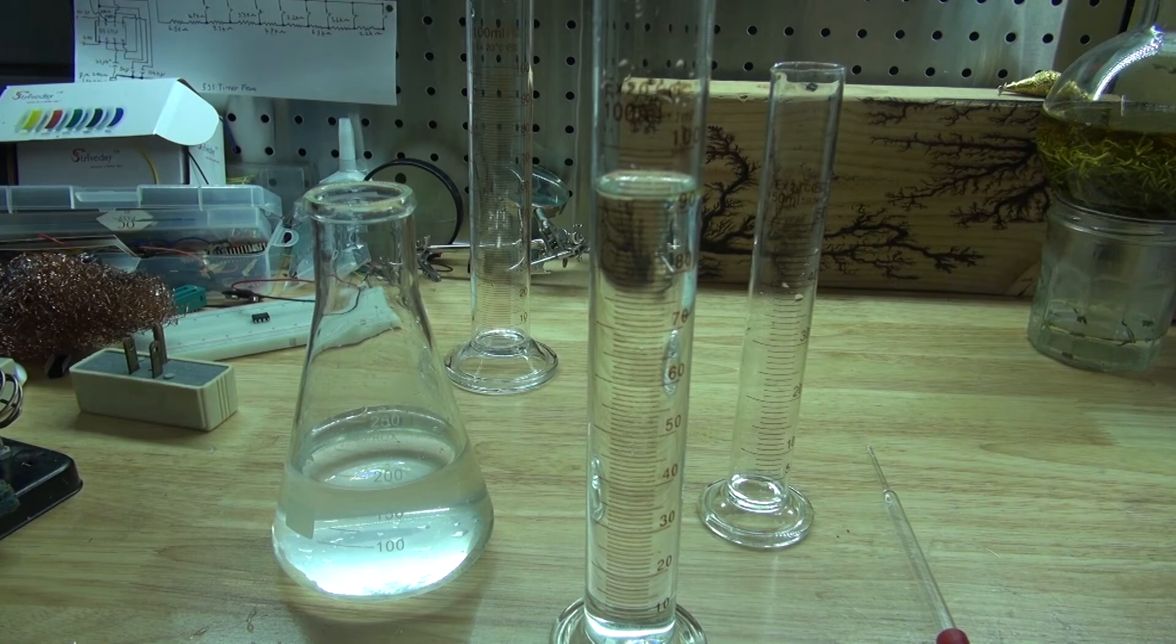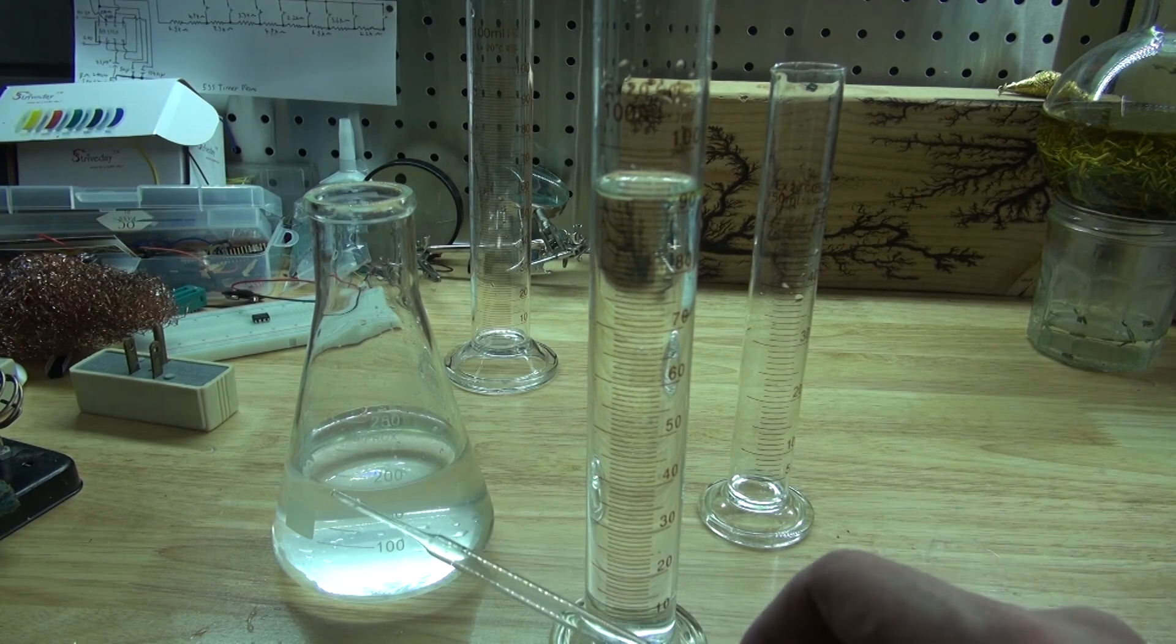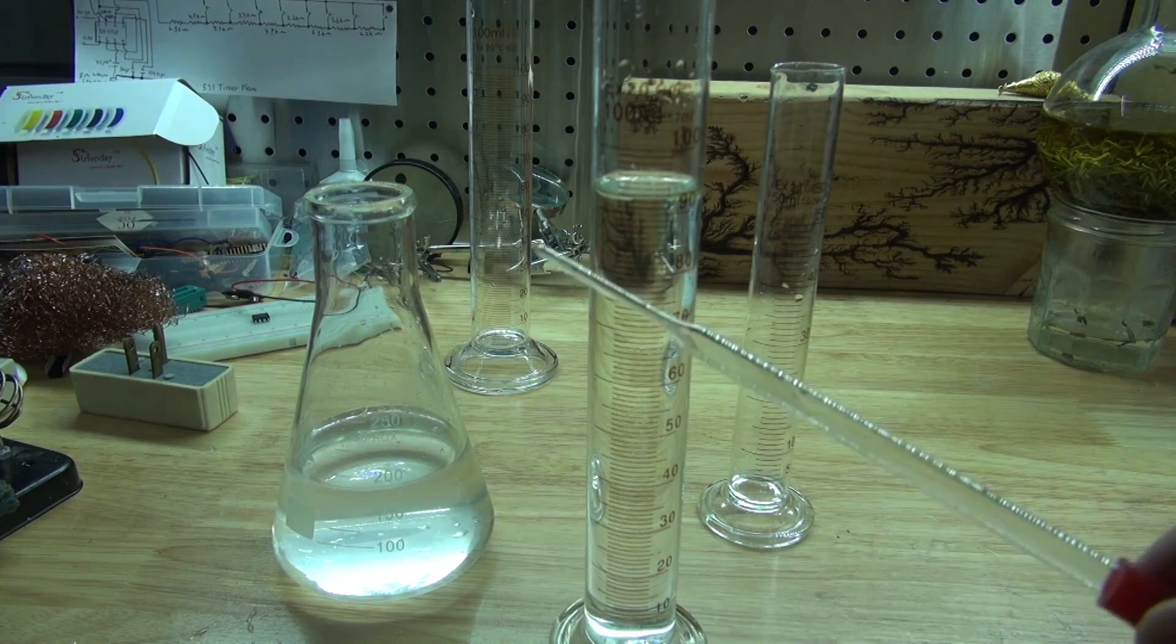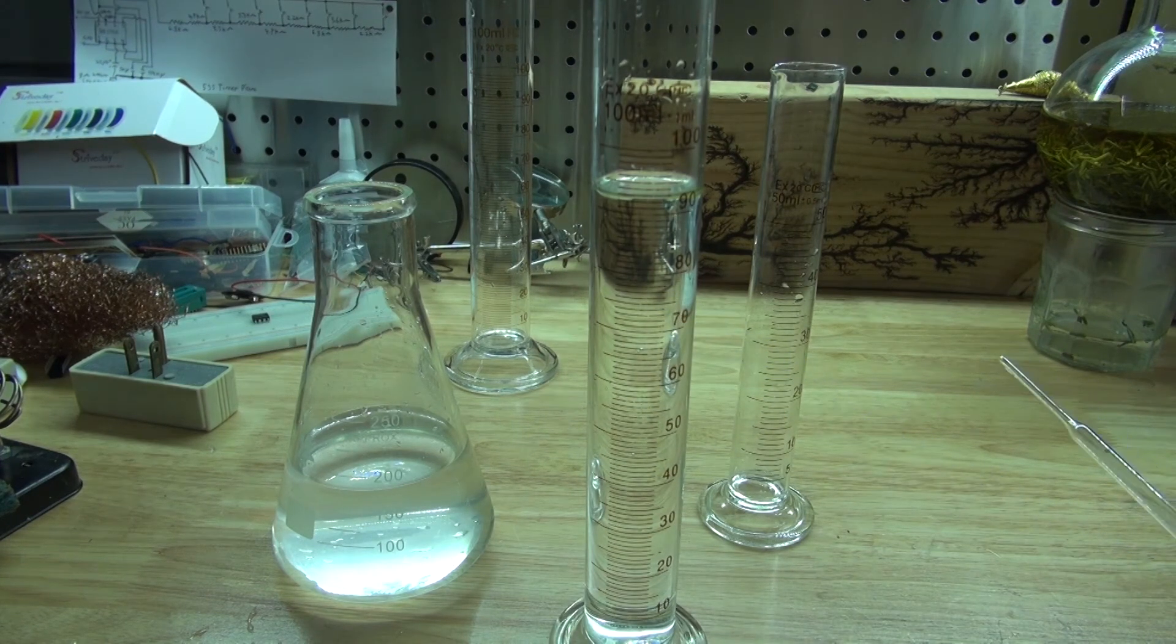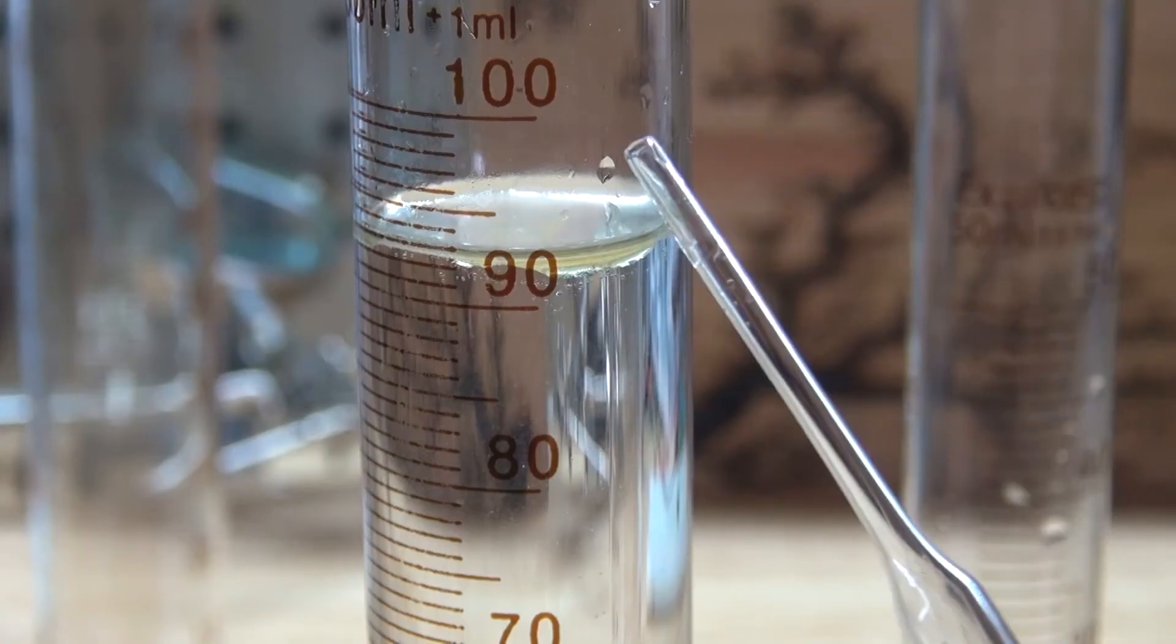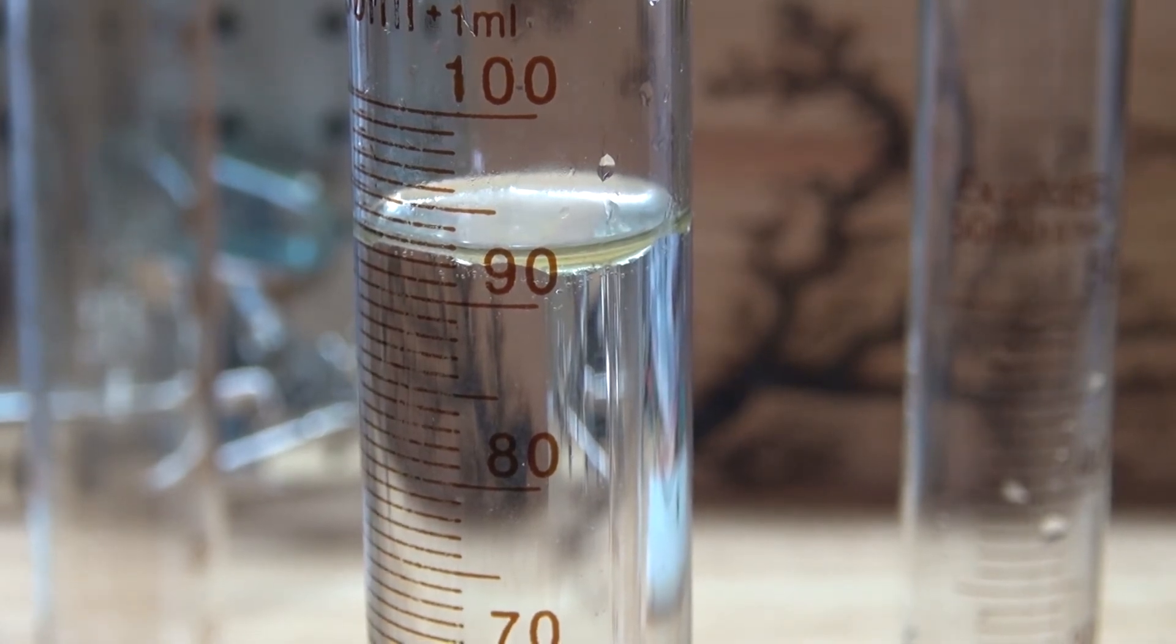As you can see this is what my final result looks like for my second batch. I've collected rosemary hydrosol in the Erlenmeyer flask and in the volumetric cylinder, some rosemary hydrosol and rosemary essential oil floating on the top. As you can see I've collected close to one milliliter of rosemary essential oil.